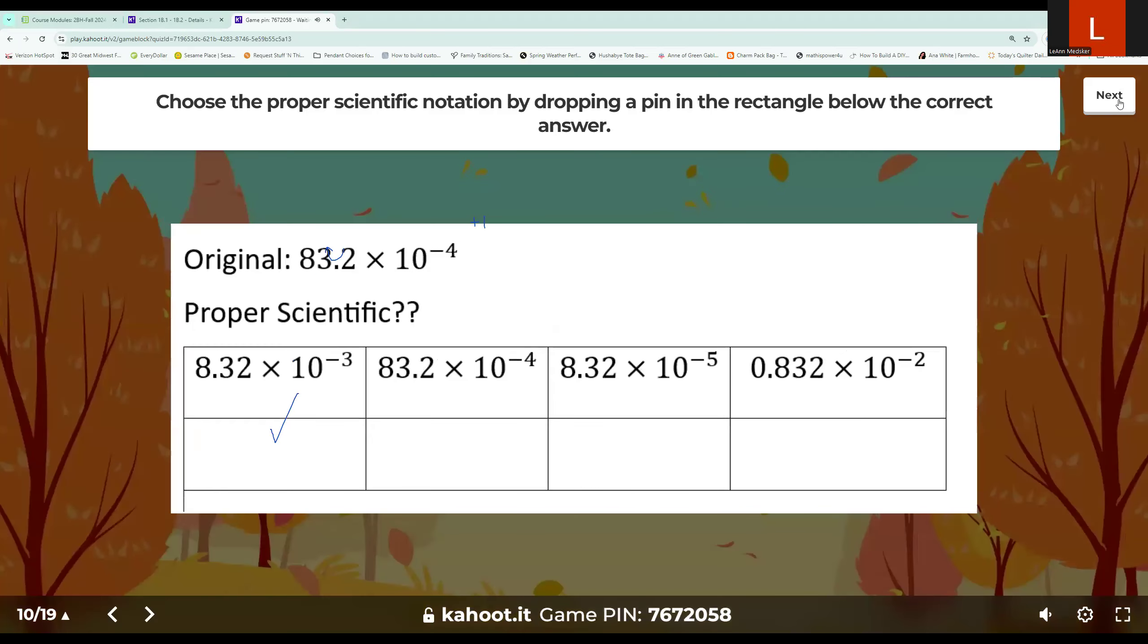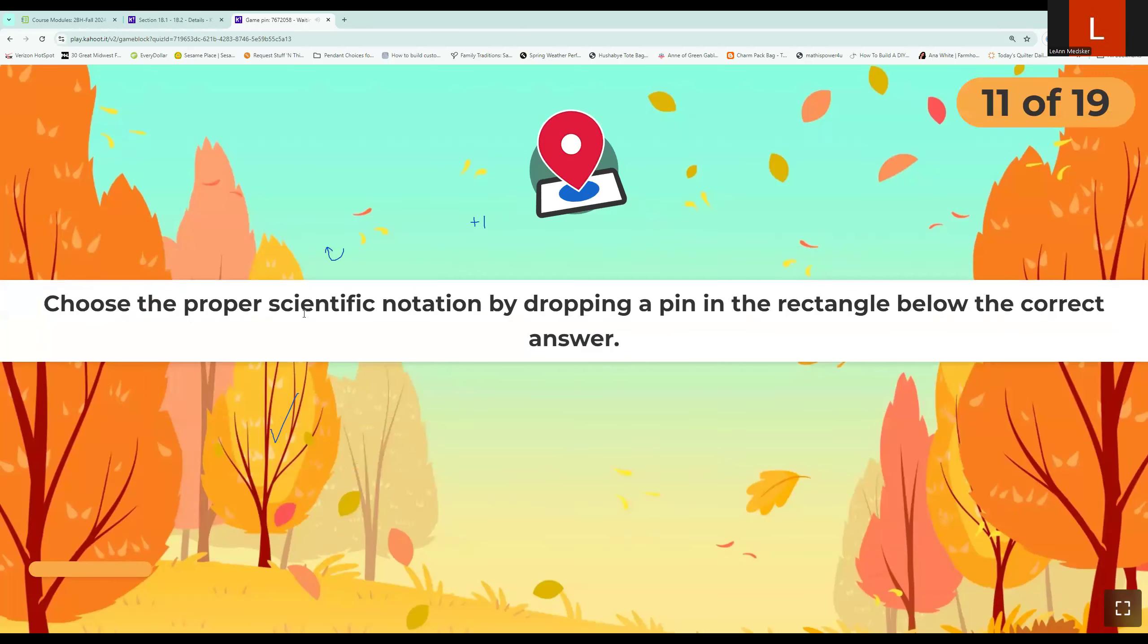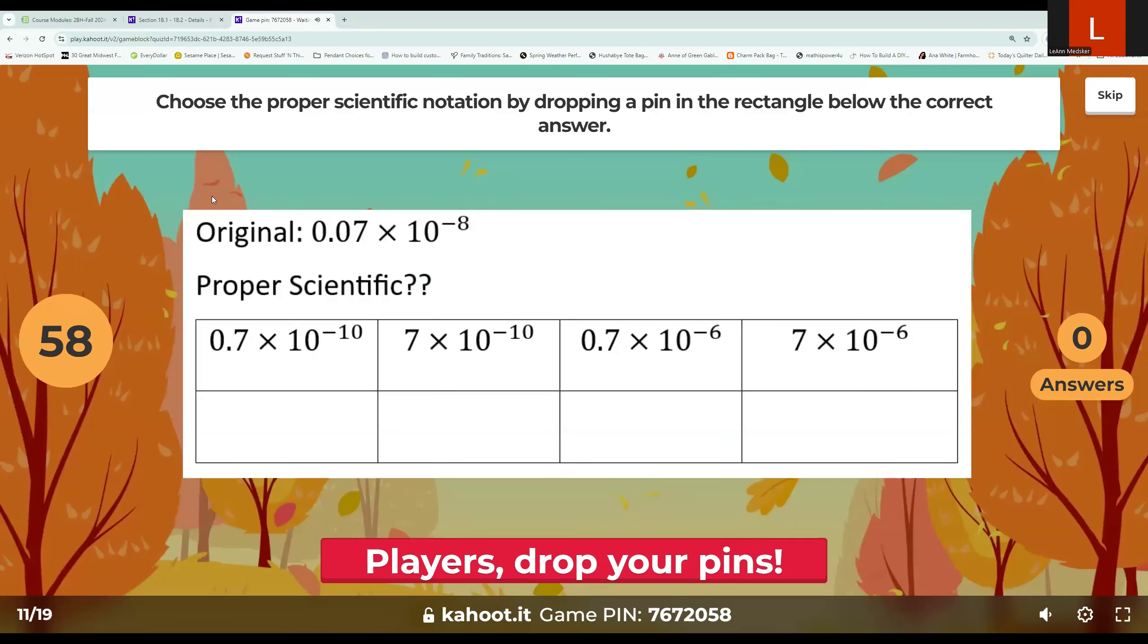So it is that choice. Okay, let's move on to our next one. So we have one more of this type, I believe. So when I look at this one, it is 0.07 times 10 to the negative 8. So we need that 7 to be the digit that's in front of our decimal place. So I'm going to move two places to the right to make that happen. When we move to the right, we subtract the number of moves we made to our power. So negative 8 minus 2 more is negative 10. And then this would just be 7 since the zeros would not count once we've moved that decimal. So 7 times 10 to the negative 10.